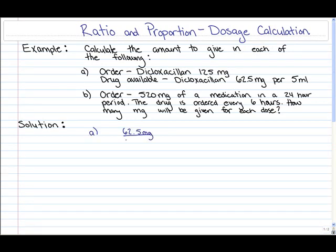For part A, if we have 62.5 milligrams per 5 milliliters of dicloxacillin available and our order was 125 milligrams, how much should we give? Well, 125 milligrams over how many milliliters? So I'm going to put the variable X under 125 milligrams, which is supposed to represent the milliliters that you're supposed to give.